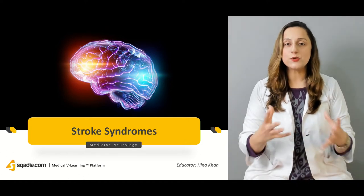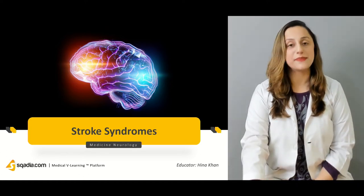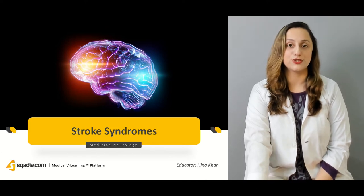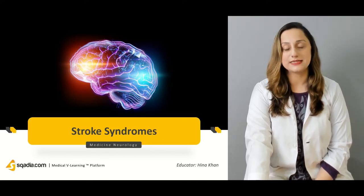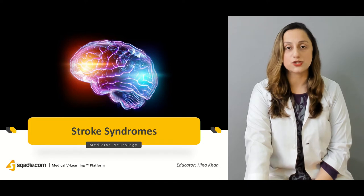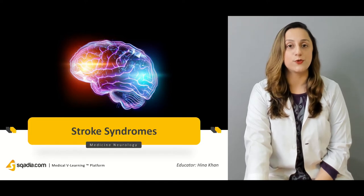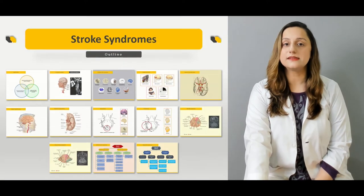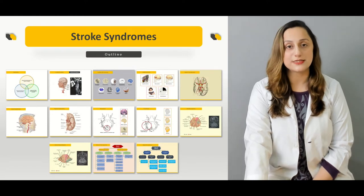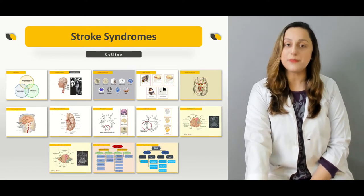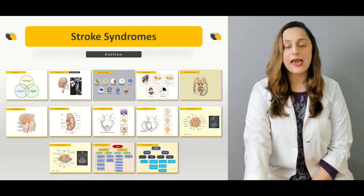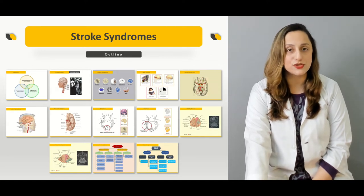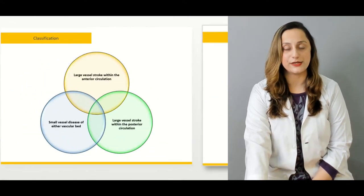Whenever we use the word stroke, it basically encompasses the brain damage that occurs due to the hindrance to the blood supply to a particular part or portion of the brain. This is divided into two major classifications: the ischemic stroke and the hemorrhagic stroke that we'll be discussing here.